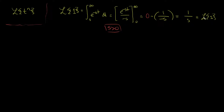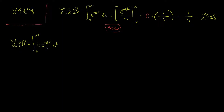Now, if we want to take the Laplace transform of t — let's see how we would do that. The Laplace transform of t is the integral from 0 to infinity of t times e to the negative st dt. Once we get to t squared, you're going to start seeing a pattern. This integral we can't evaluate directly, but we can use integration by parts.